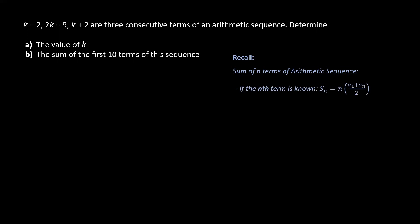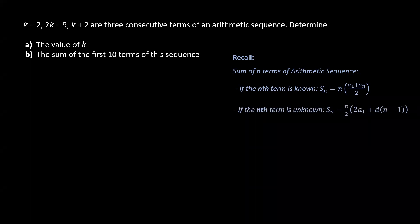If it is known, the sum will be the average of the first and the nth term times n. If the nth term is unknown, we can find the sum by the given formula where a1 is the first term and d is the common difference.